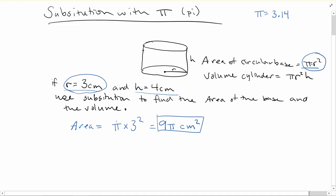So again, your answer stays as pi. You could have π × 9, but by convention we usually write the number first and then pi afterwards. Watch your units.